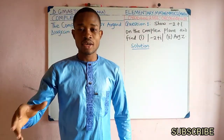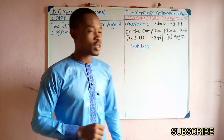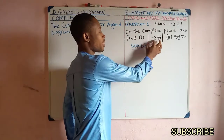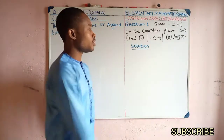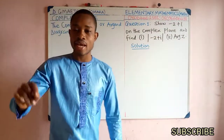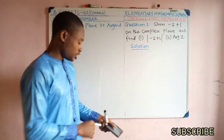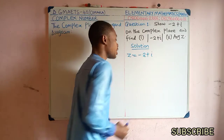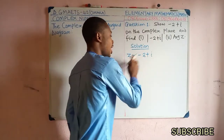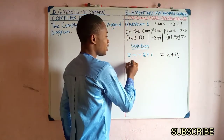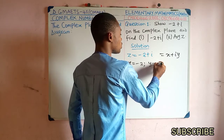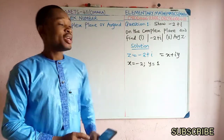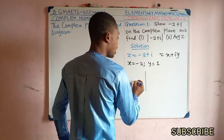Our first question: we are asked to show −2 + i on the complex plane and find the modulus and argument of Z. The complex number is Z = −2 + i. Comparing with Z = X + iY, we get X = −2 and Y = 1, since the multiplier of i gives us Y.